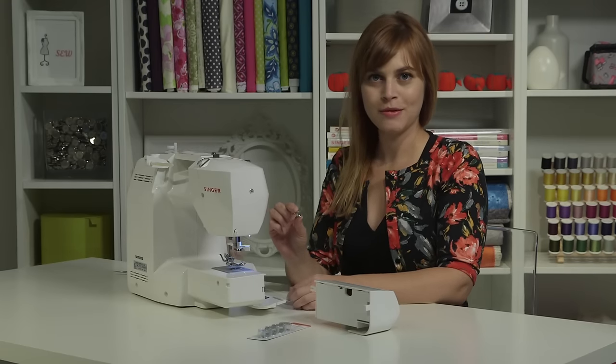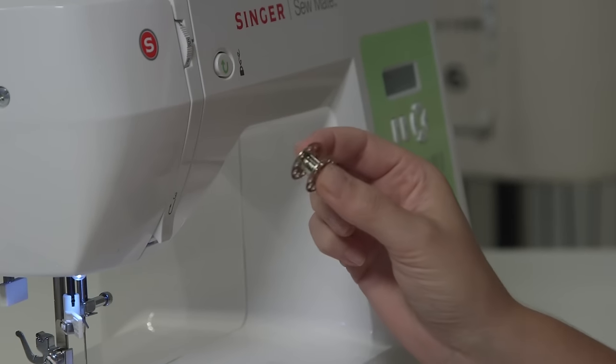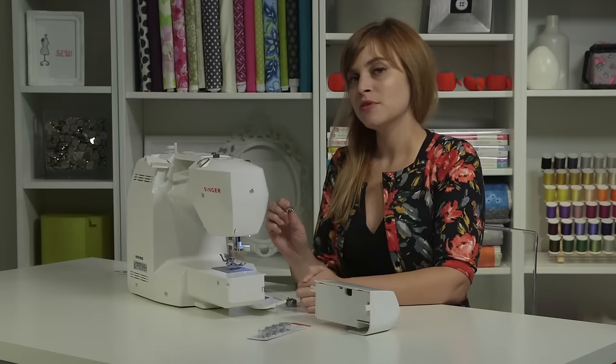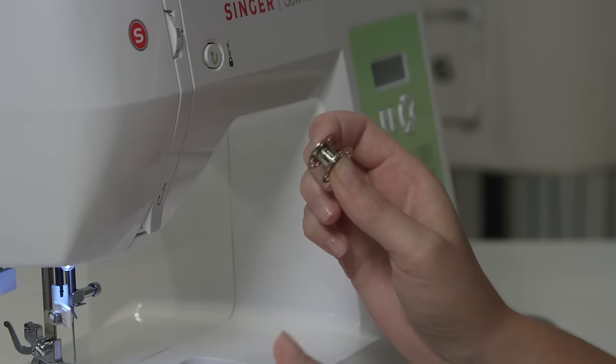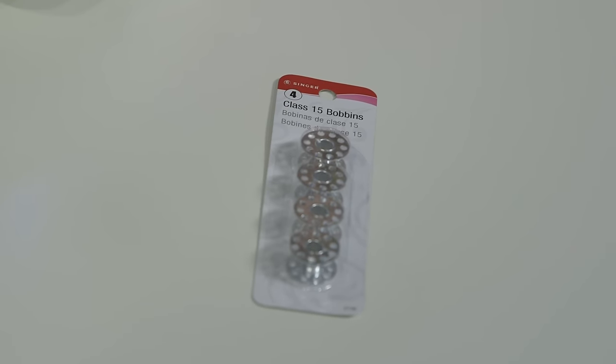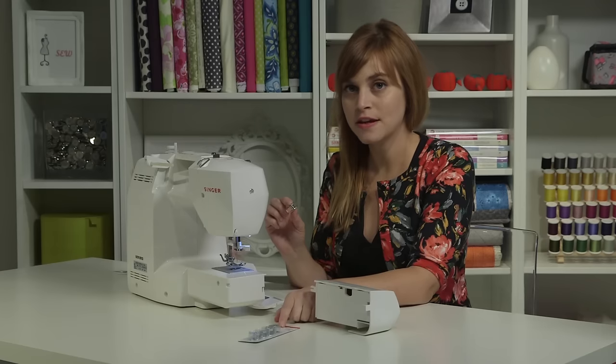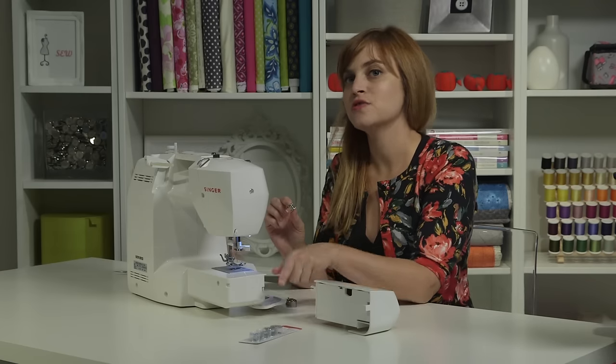A bobbin is essentially a baby spool that we're going to be winding thread onto. Your machine comes with several extra bobbins, but if you need to get more, you want to make sure that you get Singer Class 15 metal bobbins. These are the bobbins that are designed to be used in this machine, so you definitely want to make sure you get these because these will help your machine sew the best.